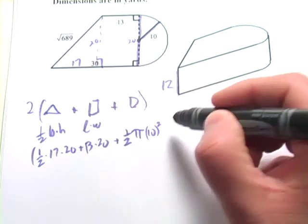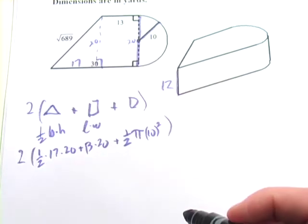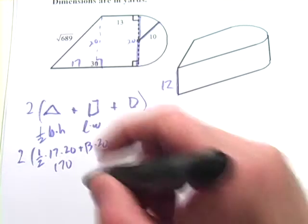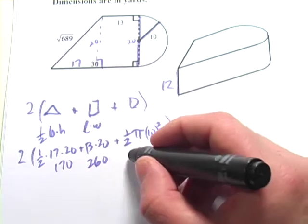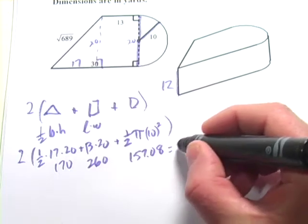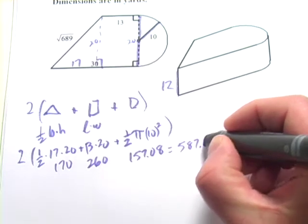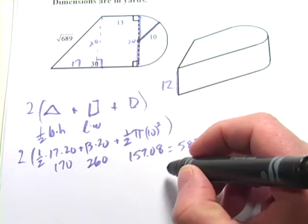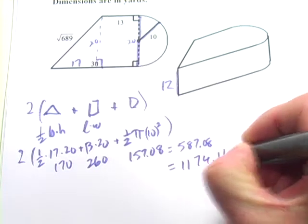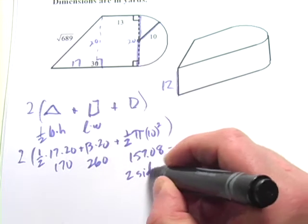Alright, and then we're going to multiply all of that by 2. So let's do a little quick calculation here. This is 170. This is 260. This is 157.08. Add that together, you get 587.08. You multiply that by 2, you get 1174.16. So that's the two big sides.